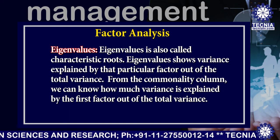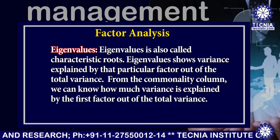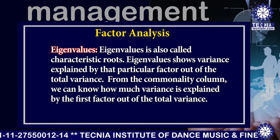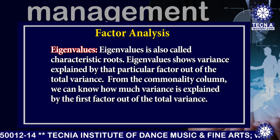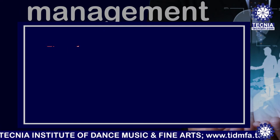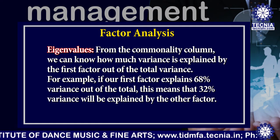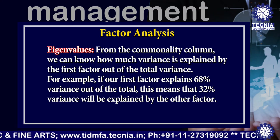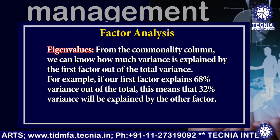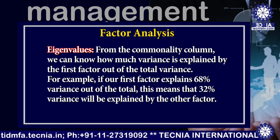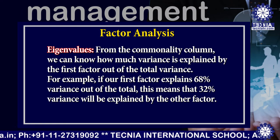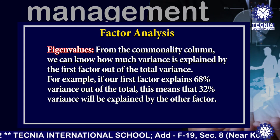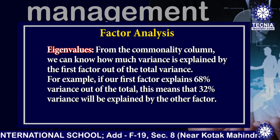Eigenvalue, also called characteristics roots, shows the variance explained by that particular factor out of the total variance. From the commonality column, we can know how much variance is explained by the first factor out of total variance. For example, if our first factor explains 68 percent variance out of the total, this means that 32 percent variance will be explained by the other factor.